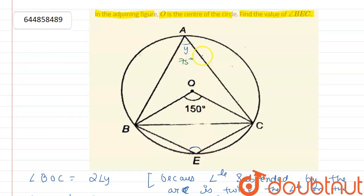So here we see that in quadrilateral ABEC, all the points A, B, E, and C are lying on the circle. Since all the points are lying on the circle, ABEC is a cyclic quadrilateral. We know that the sum of opposite angles of a cyclic quadrilateral is equal to 180 degrees.